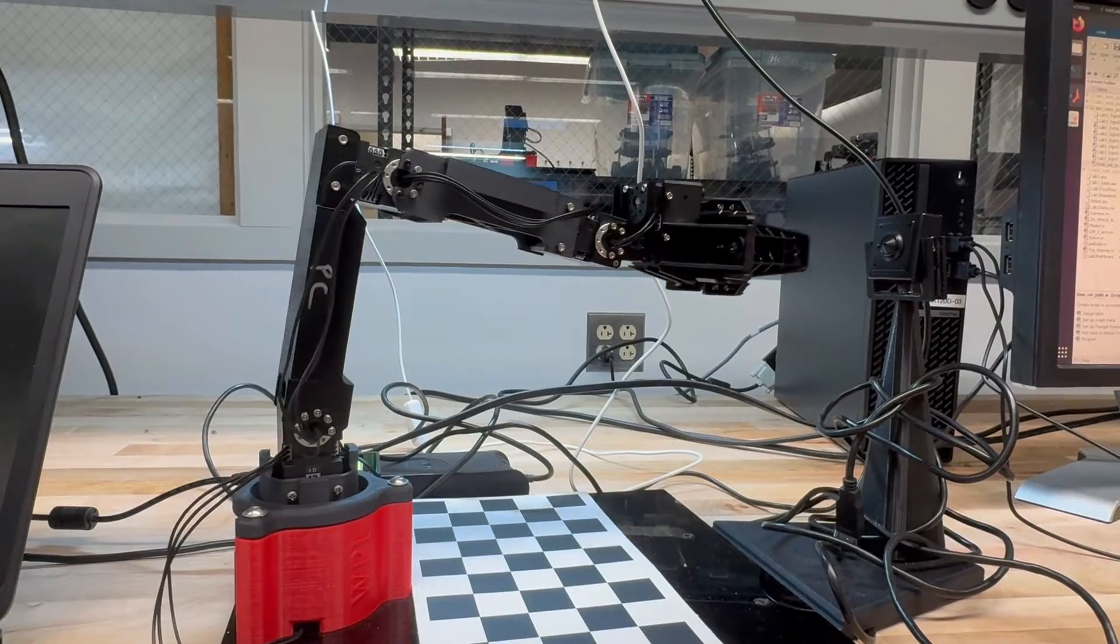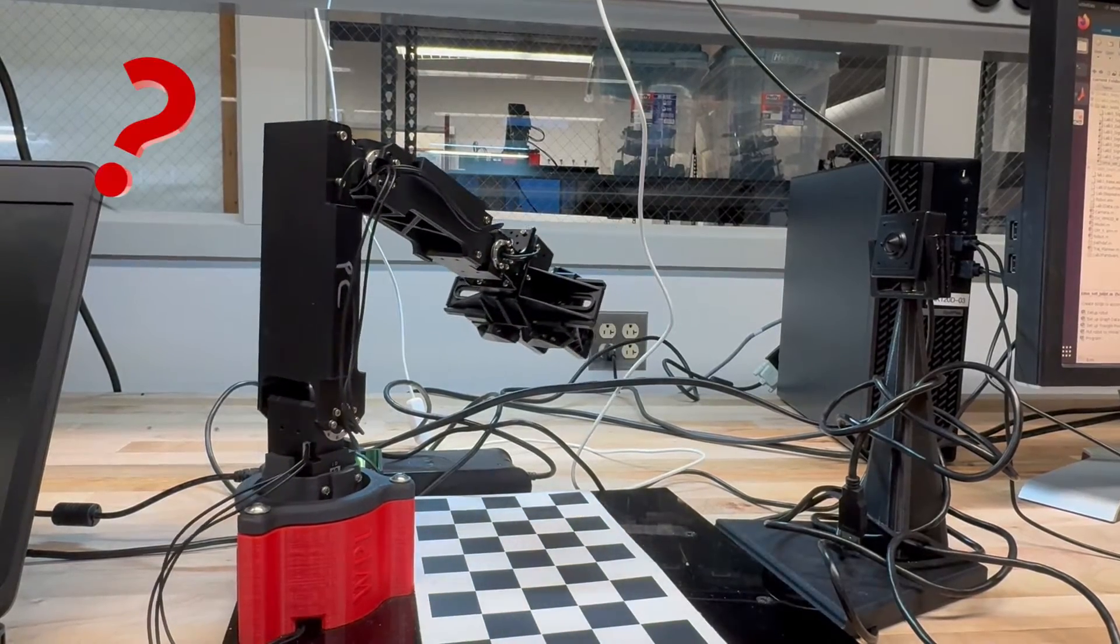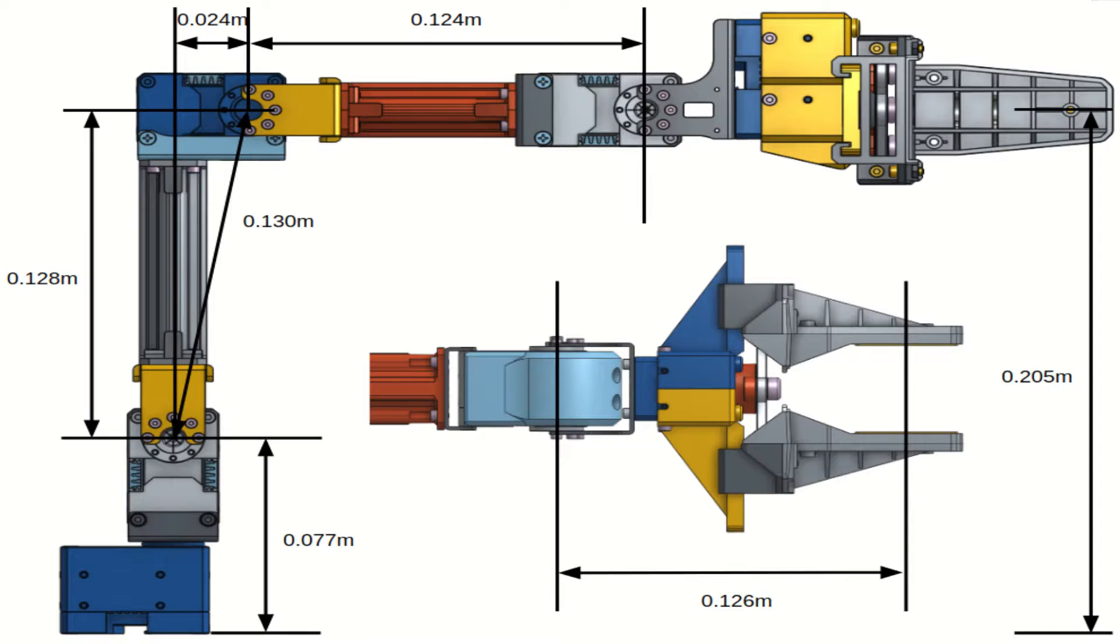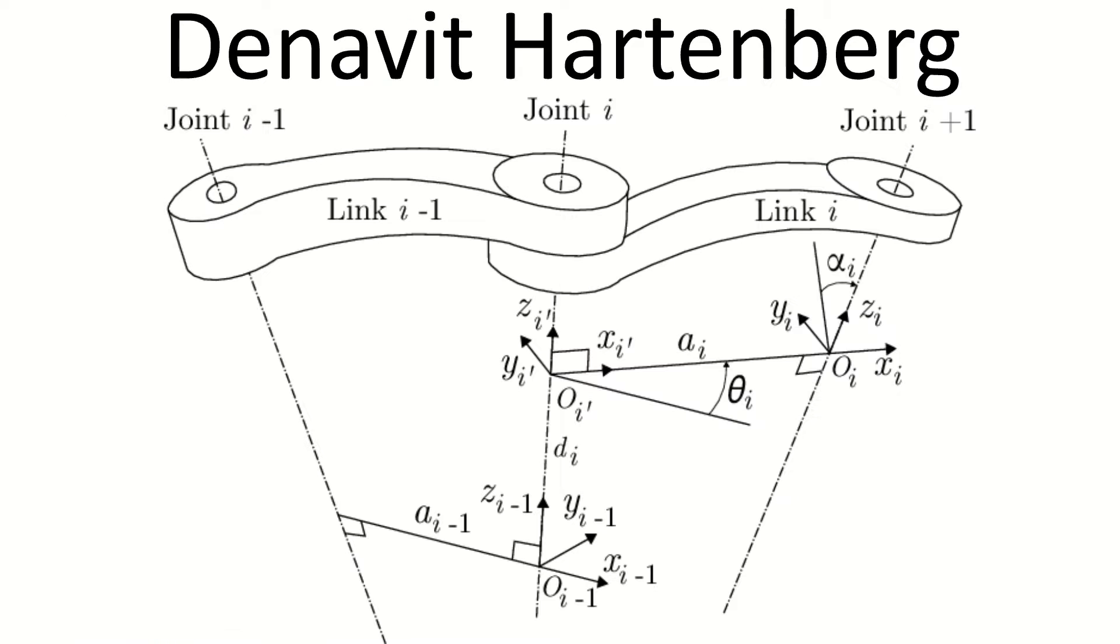To get started with this project, we needed to understand how to control and operate a 4-degree of freedom arm. We first used a common tool for assigning reference frames, the Denavit-Hartenberg convention or DH convention.